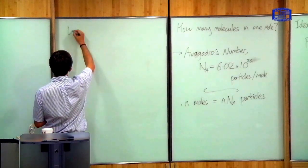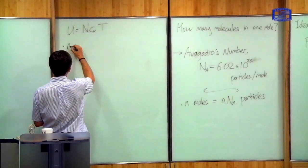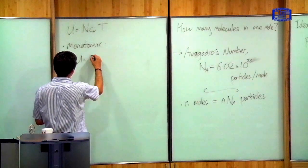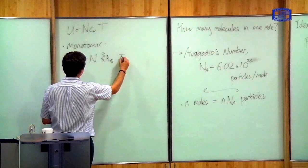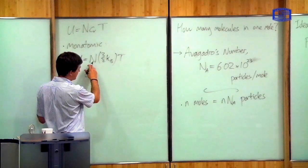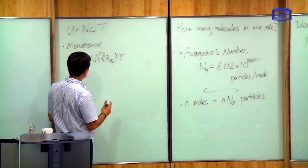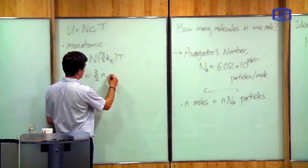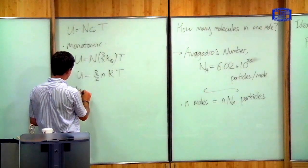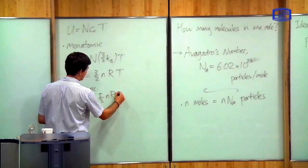You also have the second equation of state, which says U equals N·CV·T. For the monatomic case, CV was 3/2 KB, so U equals N·(3/2)KB·T, which can be written as (3/2)·n·R·T in terms of moles. Similarly for the diatomic case, CV is 5/2 KB, so U equals (5/2)·n·R·T.